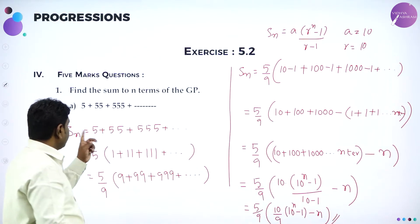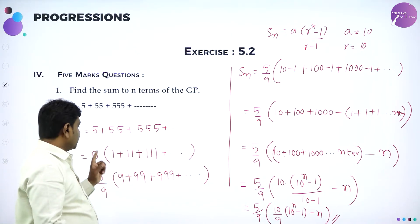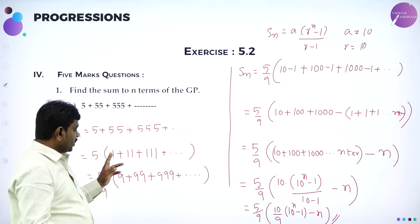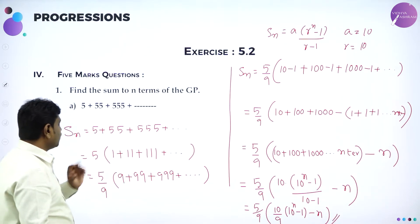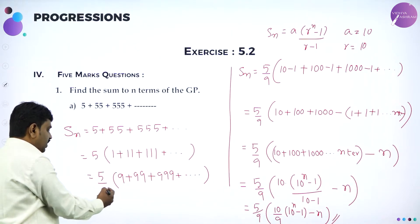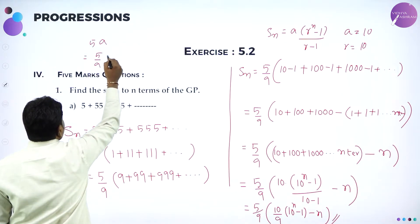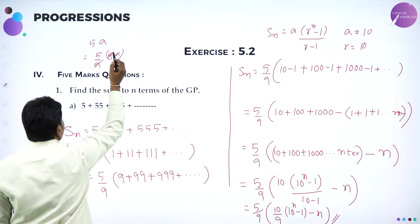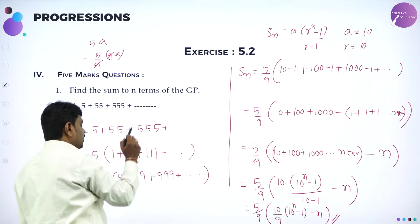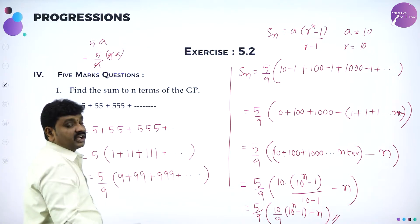Please observe — here they give 5 plus 55 plus 555. First take 5 out. If you take 5 common it becomes 1, 11, 111. And here, multiplying by 9: divide and multiply by 9 — this is a crucial step. By 9 into 9, giving 5 by 9. When you multiply by 9, every term gets multiplied: 9×1=9, 9×11=99, 9×111=999.